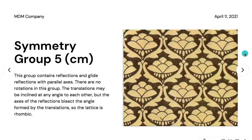Symmetry group five is named CM. This group contains reflections and glide reflections with parallel axes. There are no rotations in this group. The translations may be inclined at any angle to each other, but the axis of the reflections bisects the angle formed by the translations. The lattice is rhombic.